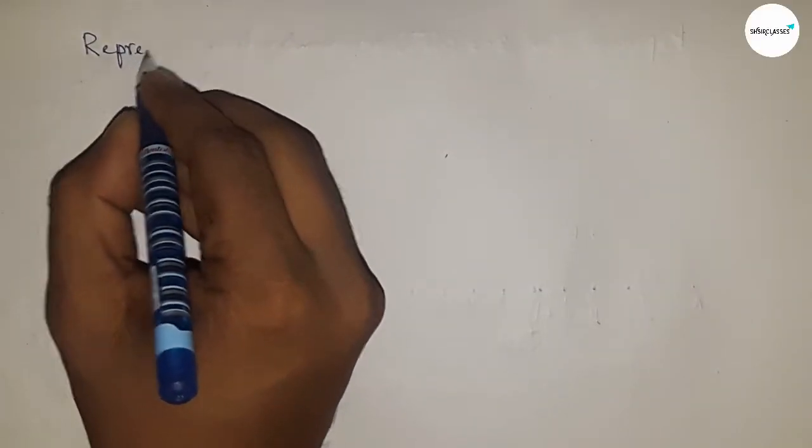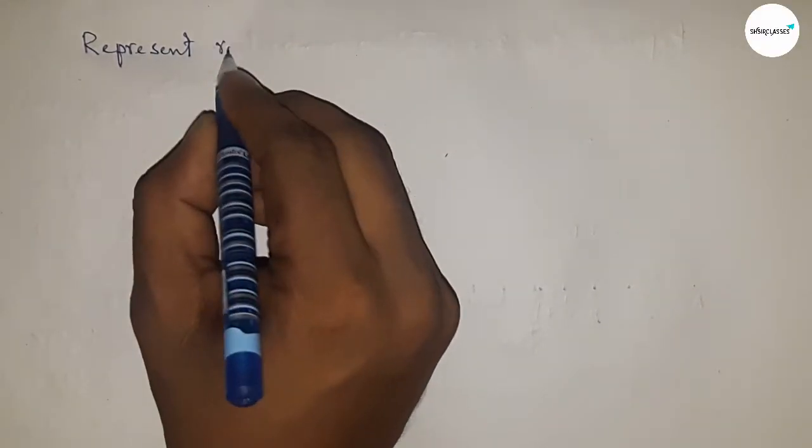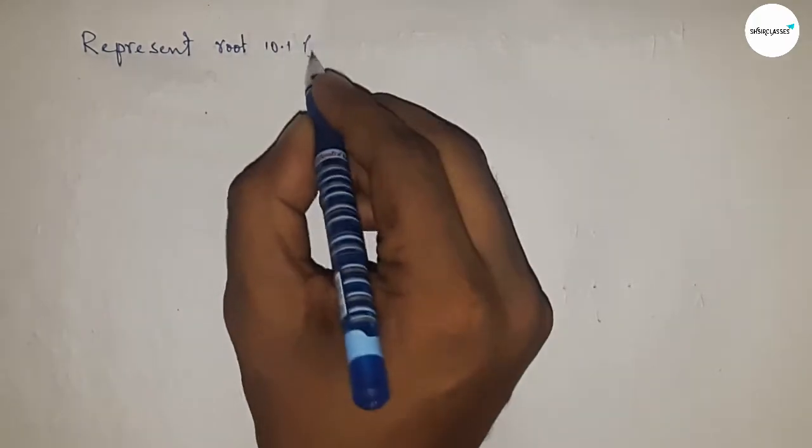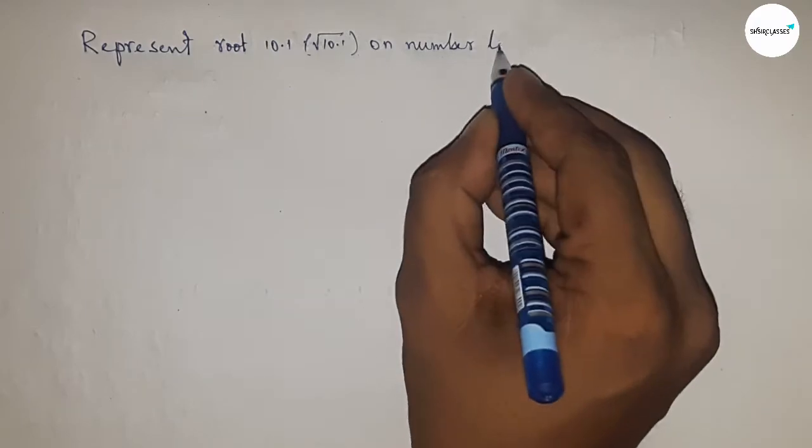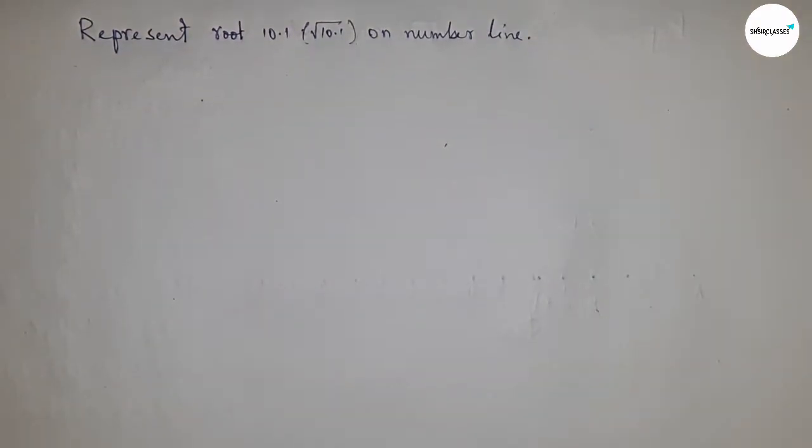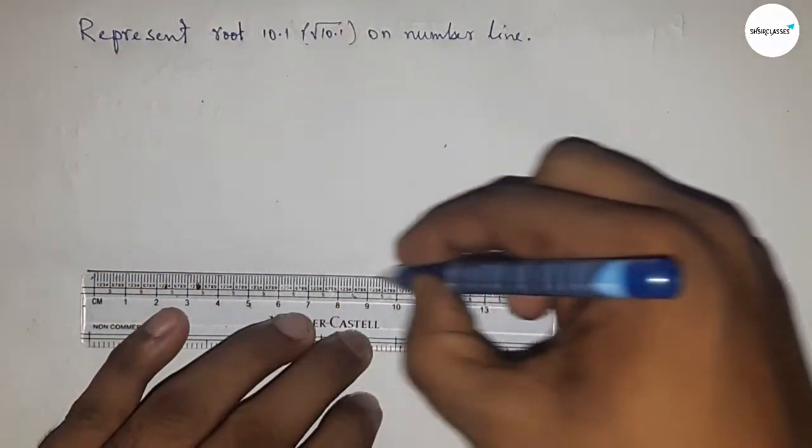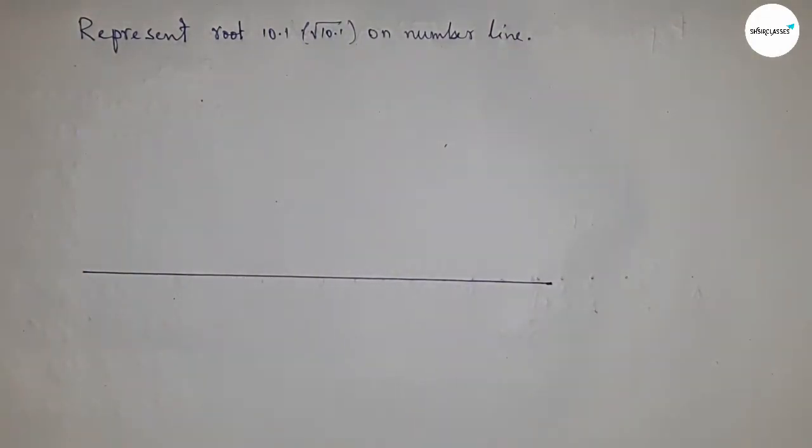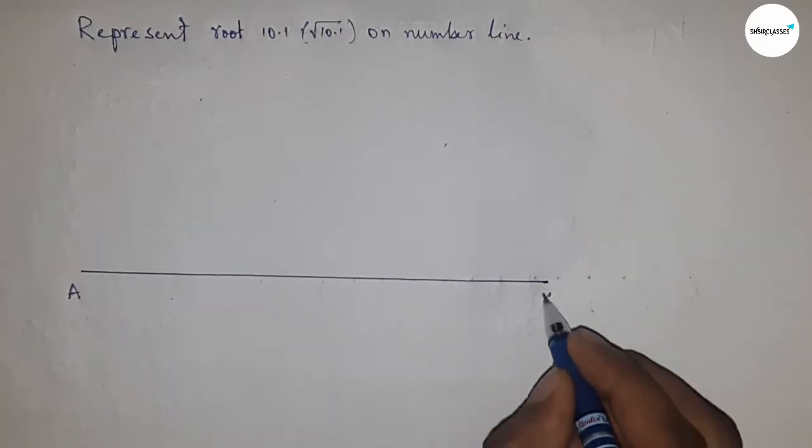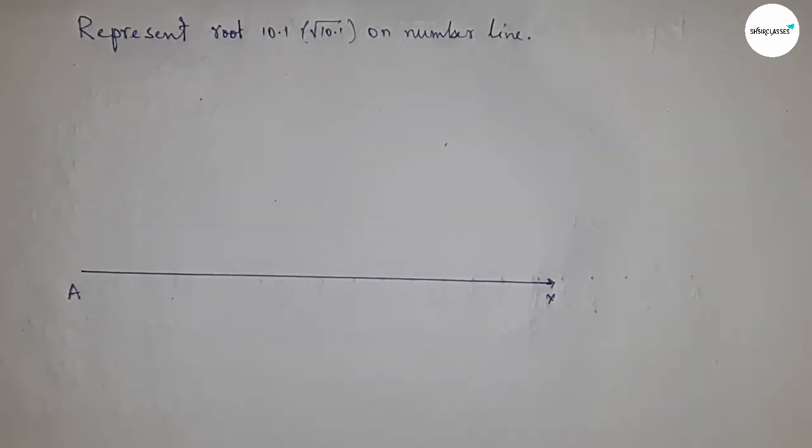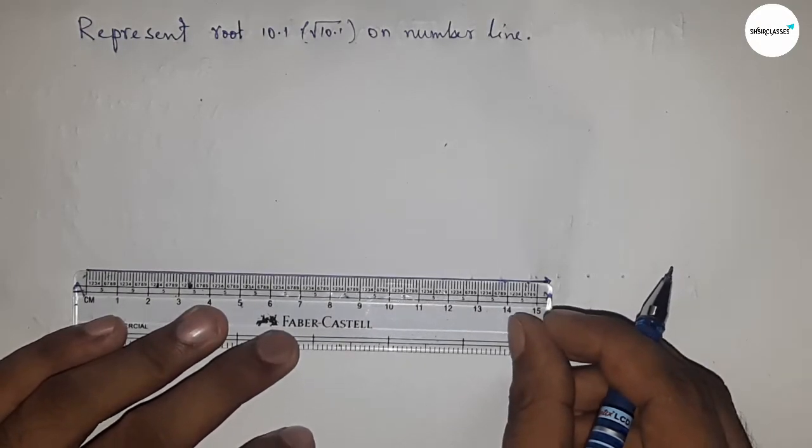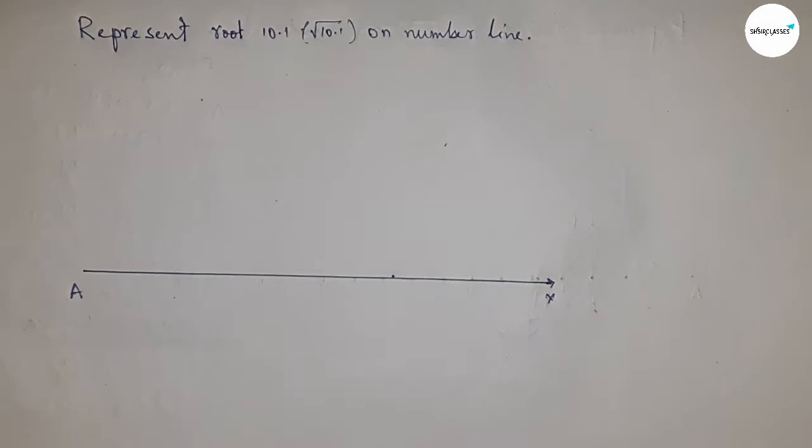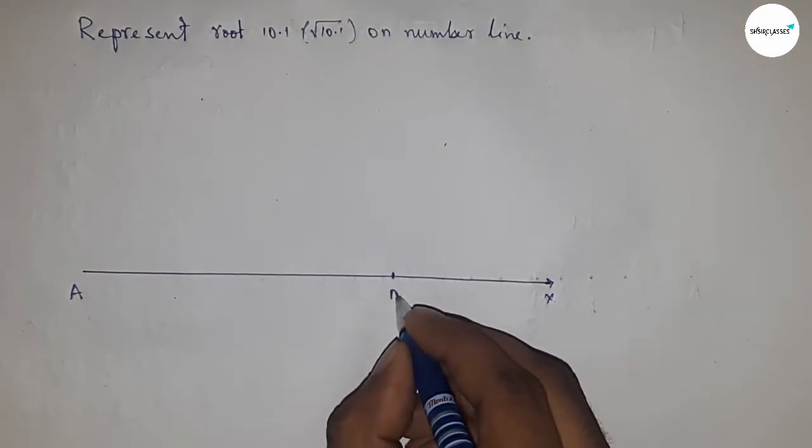Hi everyone, welcome to Accessory Classes. Today talking about how to represent root 10.1 on number line. Let's start. First of all, drawing a line of any length, and this is AX line. Next, taking 10.1 centimeter by using scale.